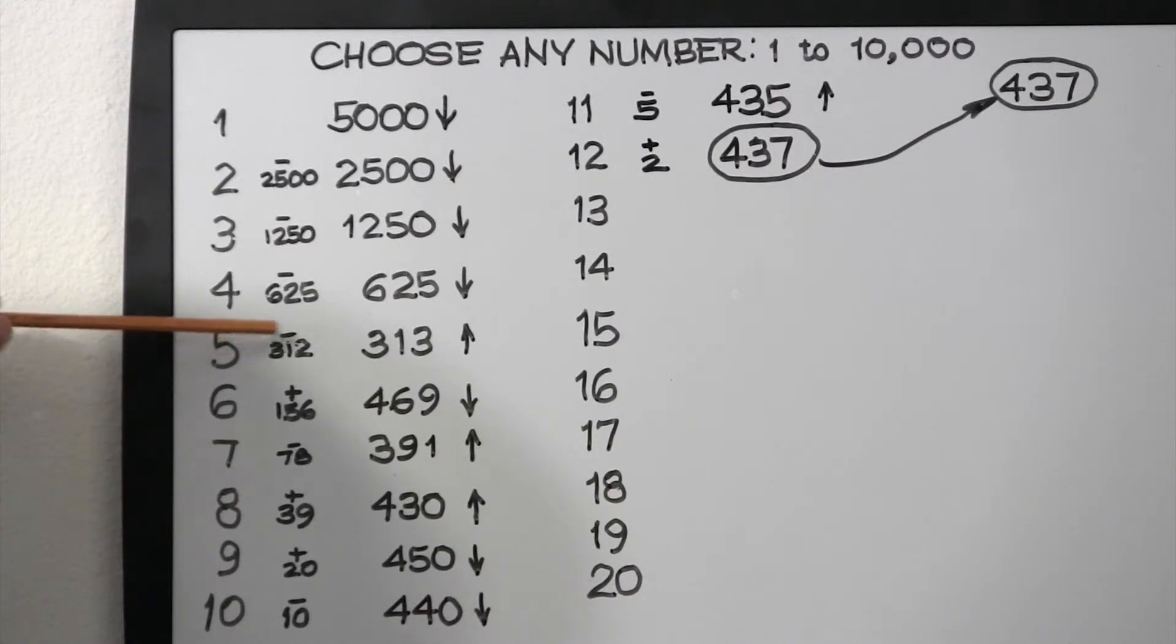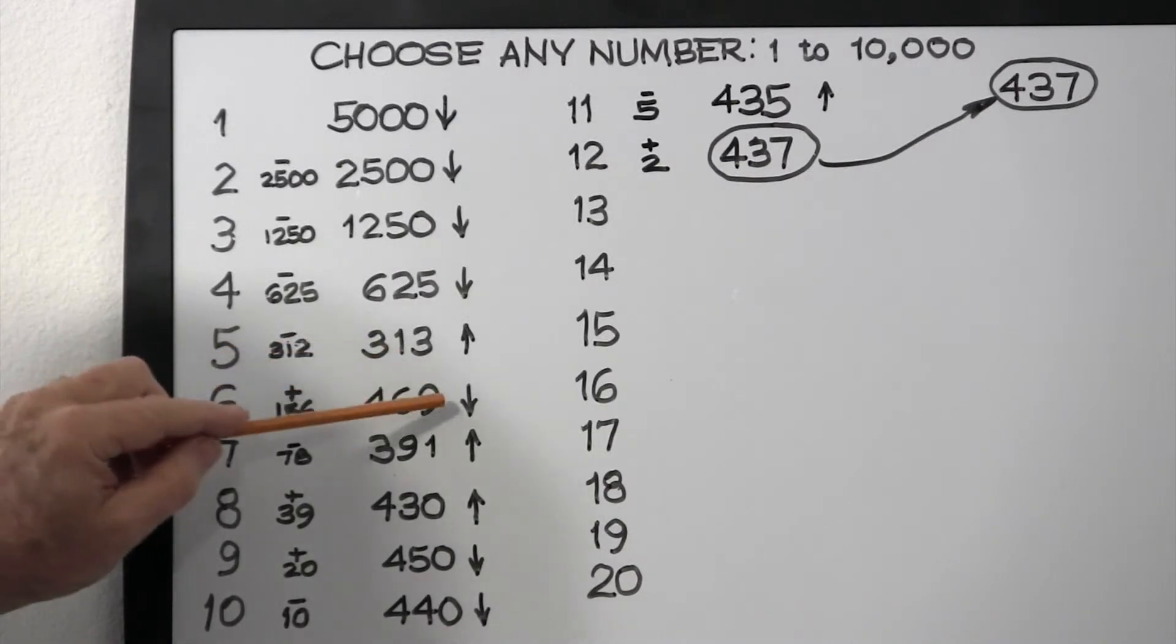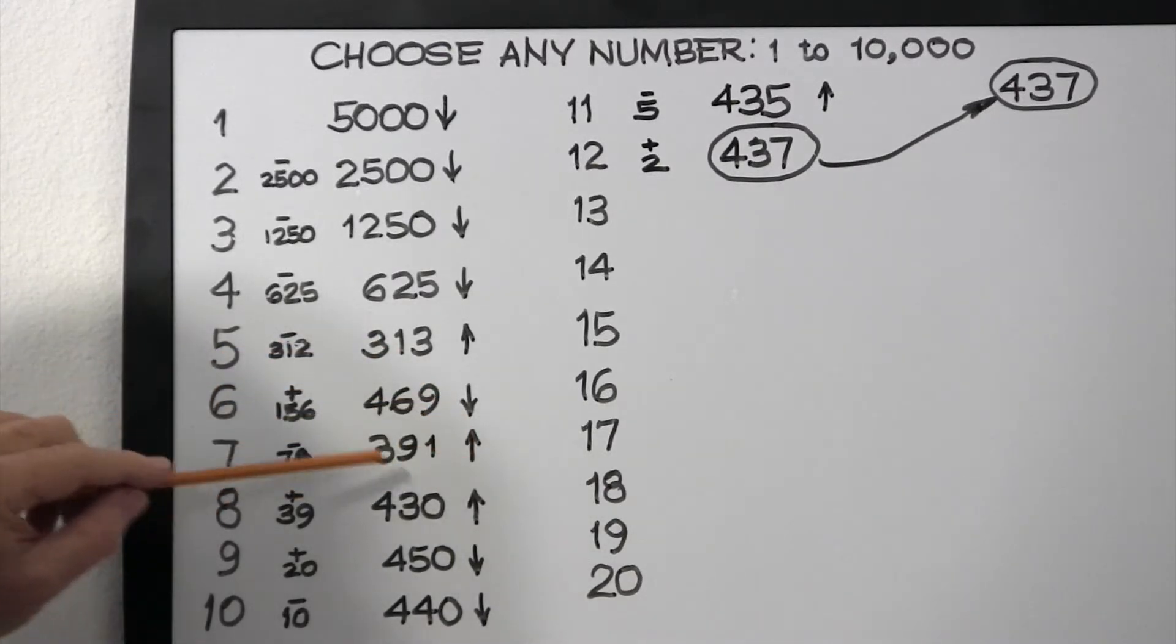And then we're told, no, that's too high, go down. So now we're subtracting 78, which makes our guess 391.